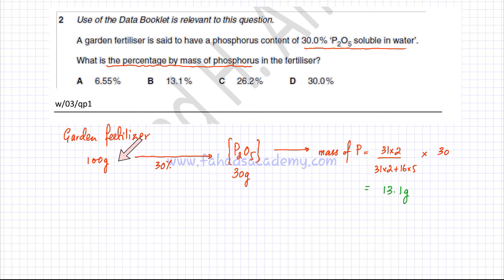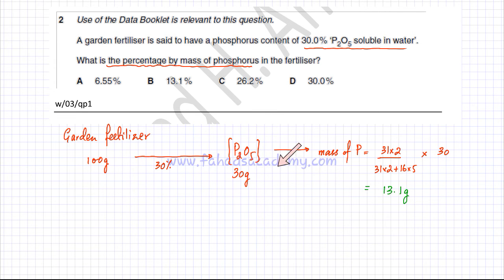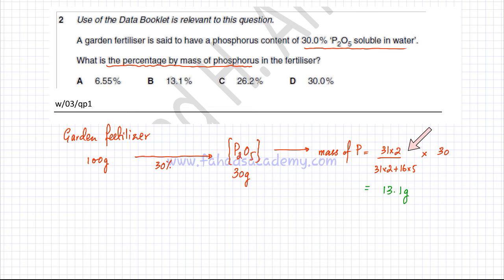To recap: I assumed 100 grams of fertilizer, of which 30 grams is P₂O₅. From that 30 grams, I calculated the mass of phosphorus using the fraction of phosphorus in P₂O₅ — two phosphorus atoms out of the total molar mass of P₂O₅ — multiplied by 30 grams, giving 13.1 grams.